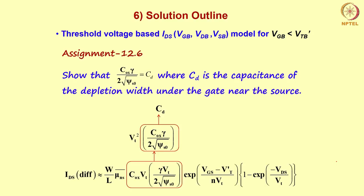So your diffusion current expression becomes: IDS = (W/L) · μ̄surf · Vt² · Cd · exp((Vgs − V'T)/(nVt)) · (1 − exp(−Vds/Vt)). In this form the expression is easy to remember. Assignment: show that Cox·γ/(2√ψs0) = Cd, where Cd is the capacitance of the depletion width under the gate near the source.